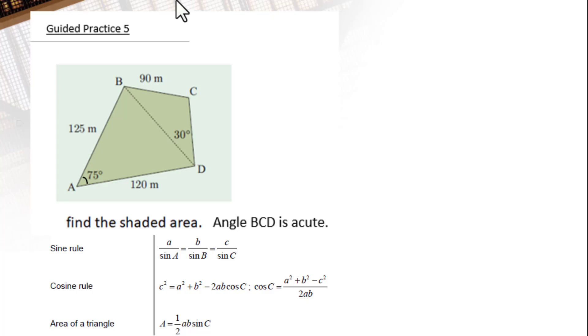Since 75 degree is the included angle, we can figure out area of triangle ABD equals one-half. AB is 125 times AD 120 times sine 75 degree.